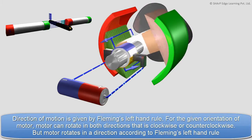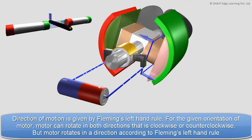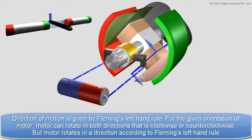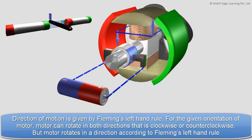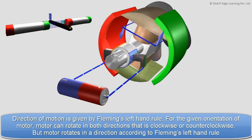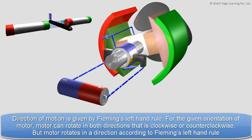For the given orientation of motor, motor can rotate in both directions, i.e., clockwise or counterclockwise. But motor rotates in a direction according to Fleming's left hand rule.